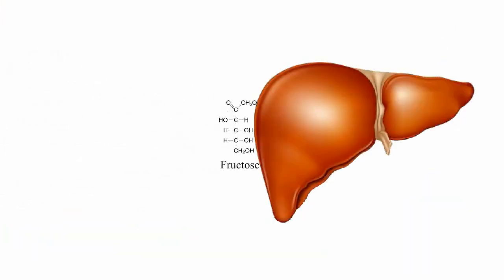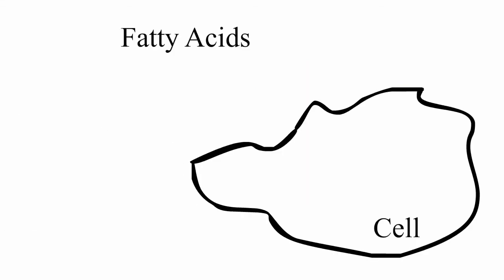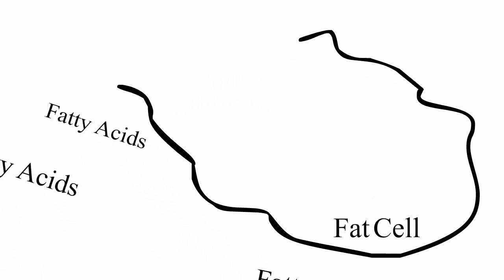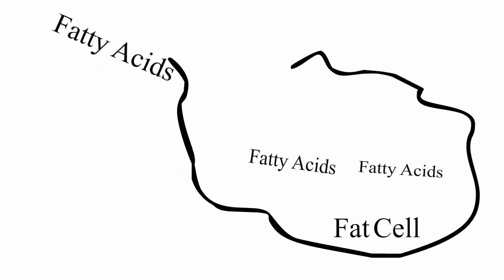this fructose has to be broken down in the liver. The liver converts the fructose into everybody's favorite chemical, fat, in the form of fatty acids. A few of these fatty acids are used for energy by the cells, but the vast majority are transported to your body's fat cells, where they are stored for future energy.